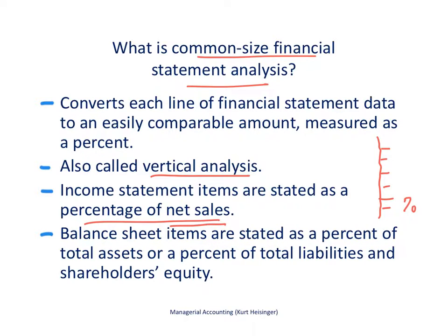On the balance sheet, items are stated as a percent of total assets, or as a percent of total liabilities and stockholders' equity — they're the same. Total assets equals total liabilities plus shareholders' equity. So we're going to look at line items in the balance sheet as a percent of total assets. For example, we'll look at cash as a percent of total assets.